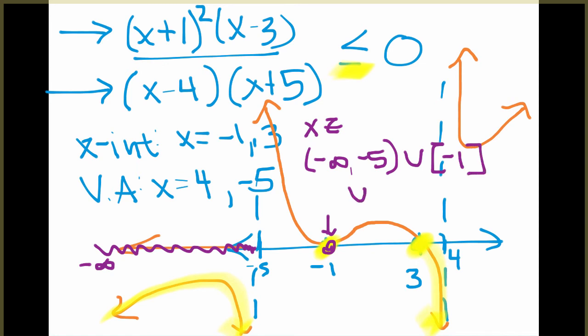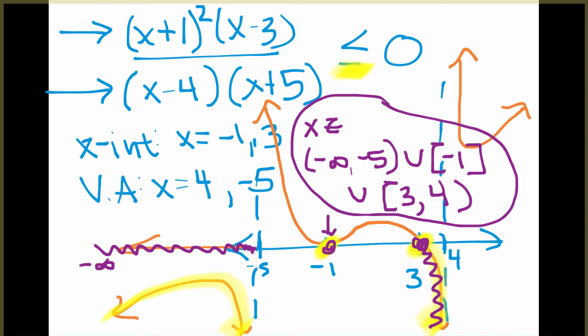And then our third piece starts at 3, and it includes 3, because it can equal 0, all the way to 4. So just a small piece there. And 4 is going to have a parentheses because it is an asymptote. So there are three sections of the graph here where it is less than or equal to 0.